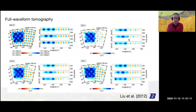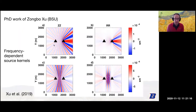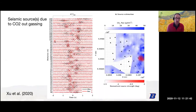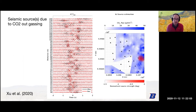That's all been structure imaging. Zongbo, a student who recently graduated, worked on source imaging — new derivations for how a source influences the seismic wave field. He makes kernels where every point is a potential source and the source influences the cross-correlation between two receivers. This is applied to a gas flux study where CO2 is degassing from the subsurface and generating seismic waves. Blue is gas flux measurements; red is Zongbo's estimate of where sources are generated over a three-hour period. Red waveforms are new predictions using full waveform tomography for source imaging.